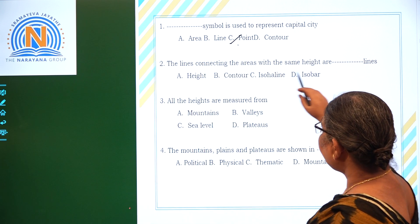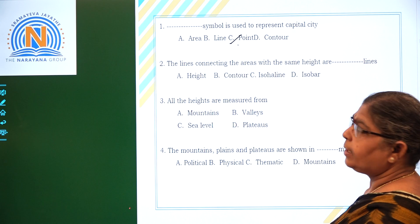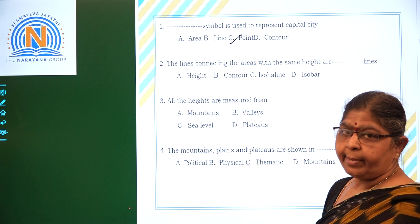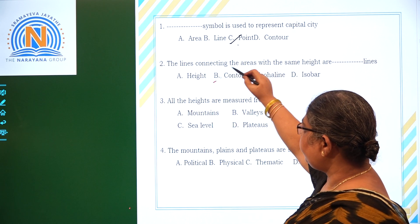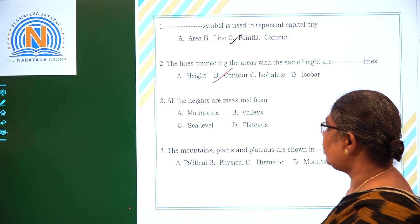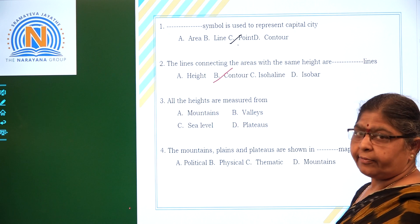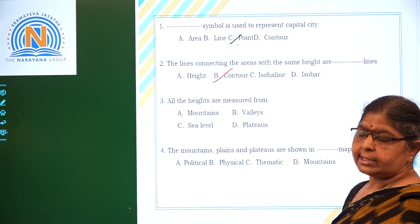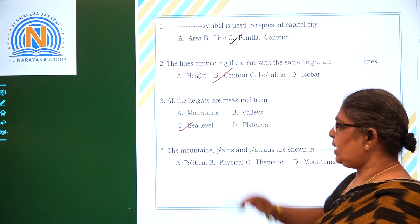The next question is about lines connecting areas of the same height. These lines are called contour lines. All the heights of the earth's surface are measured from the sea level.